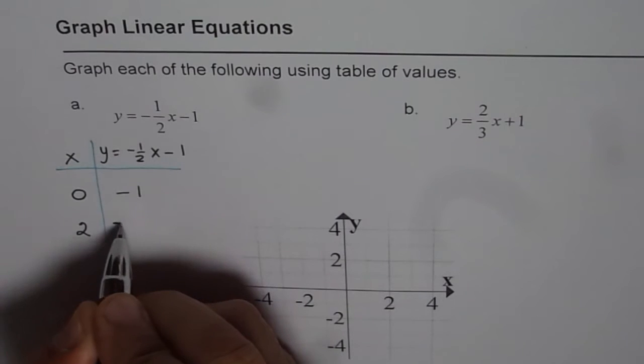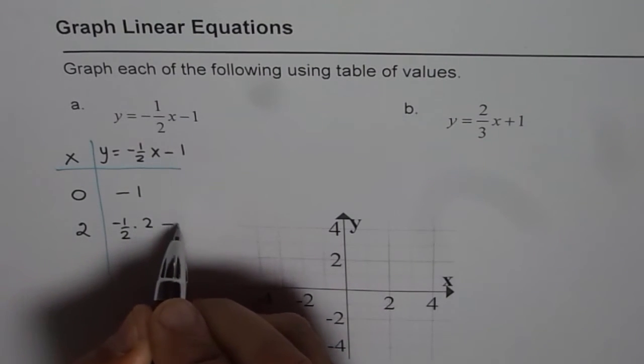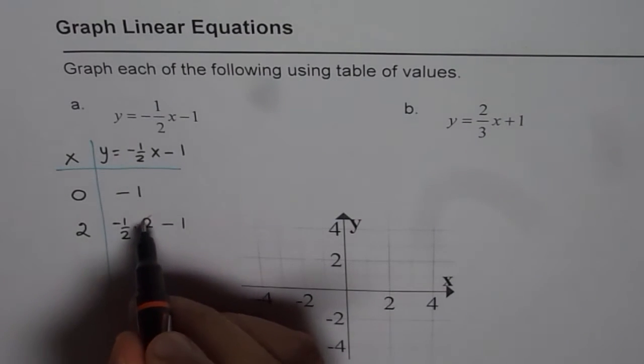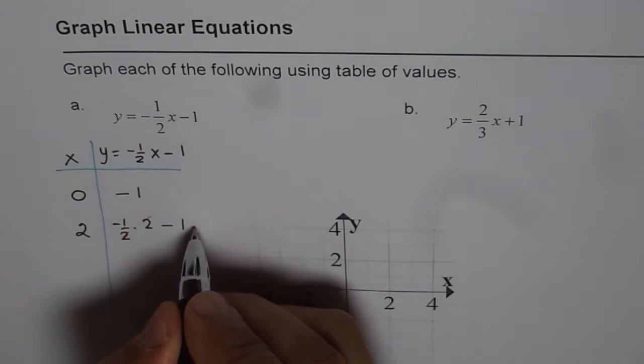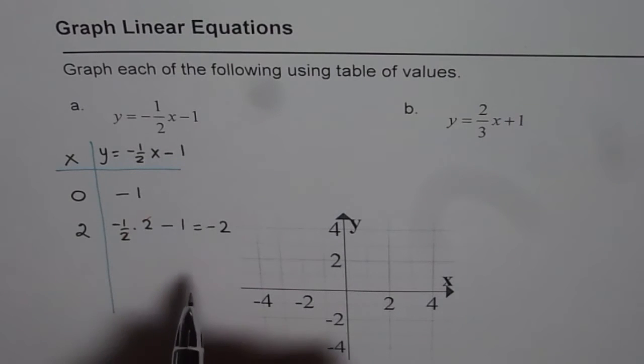Let me show you here. So, we have half of, we are taking x value as 2 minus 1. Now, 2 divided by 2 is 1. So, we get minus 1 minus 1, which is minus 2. So, that's the whole idea.